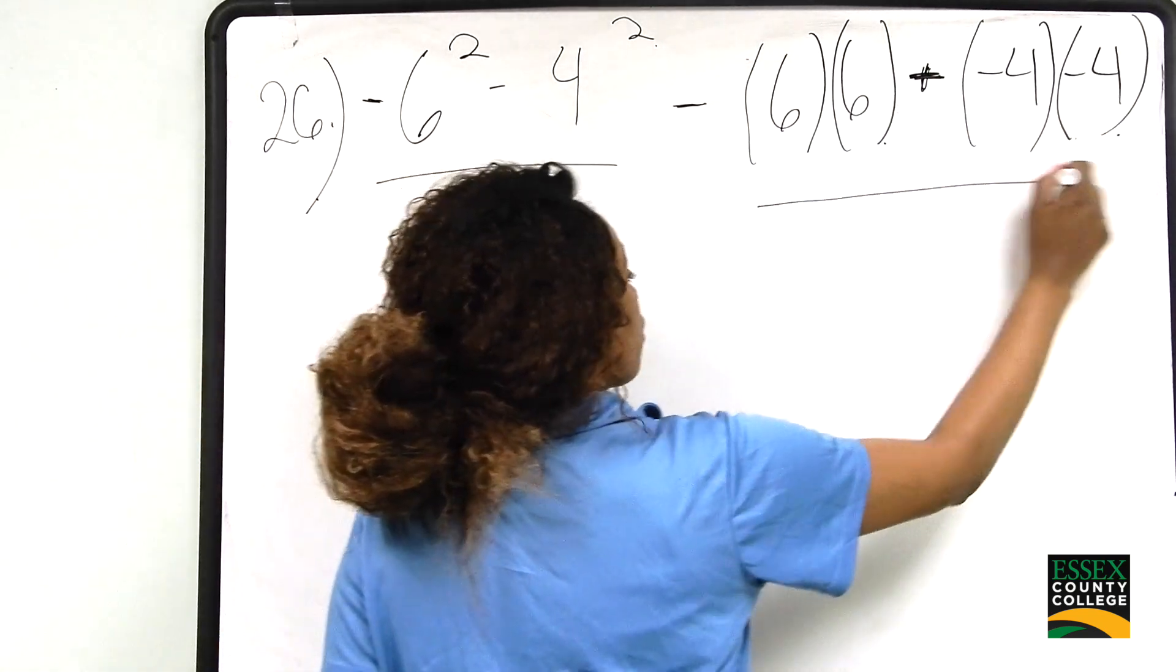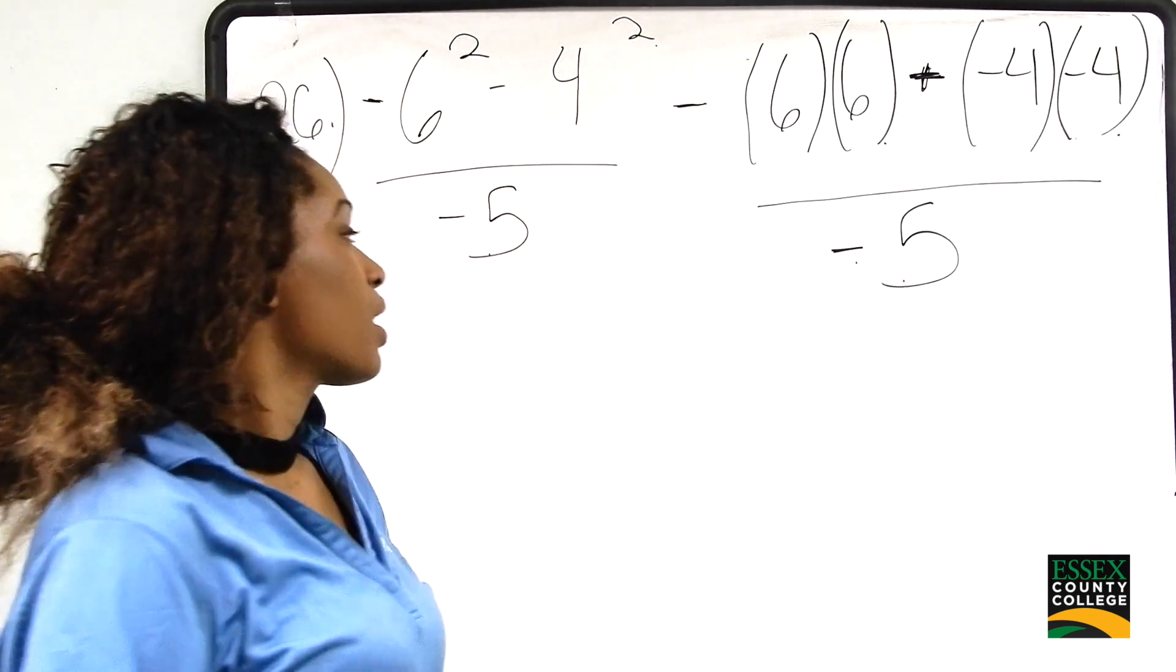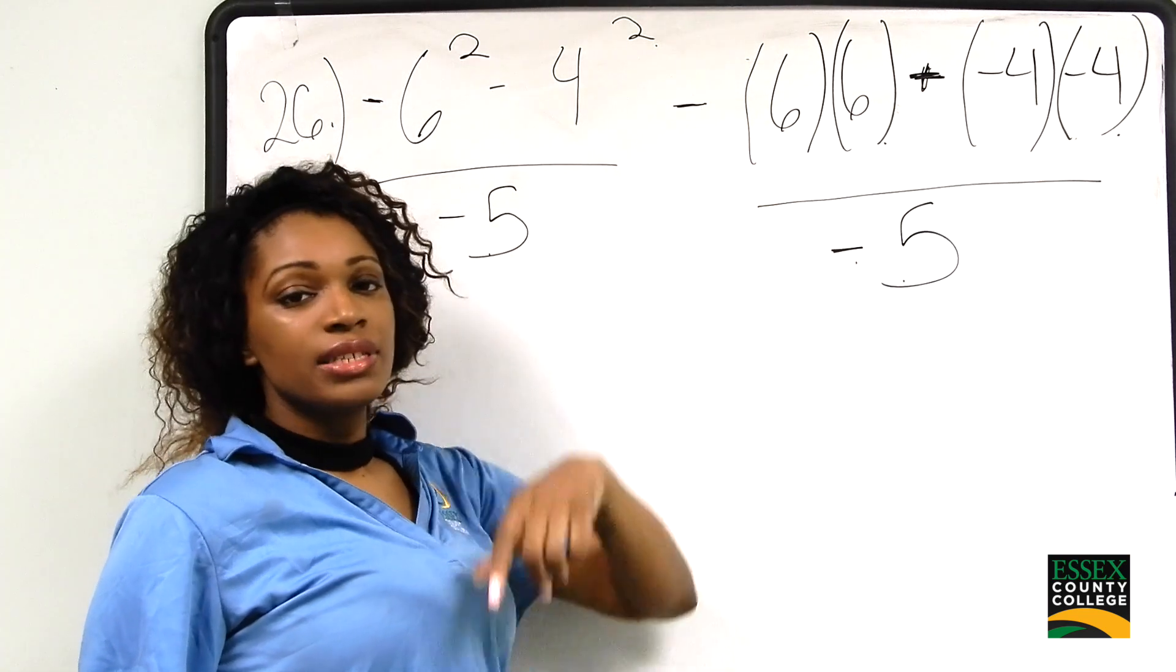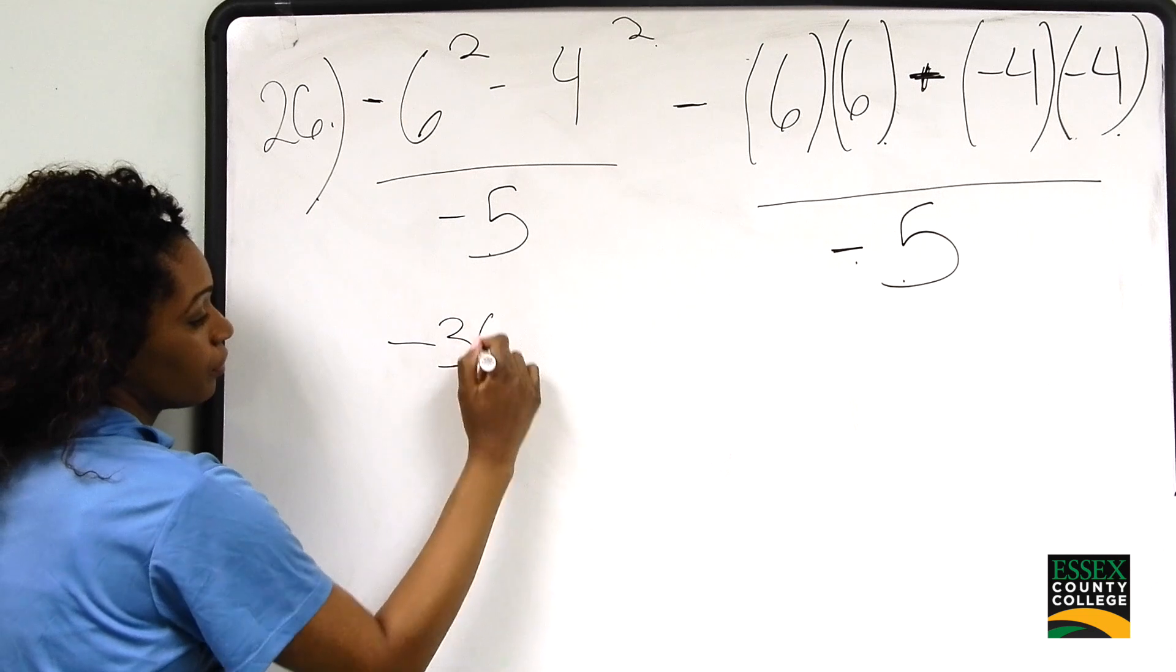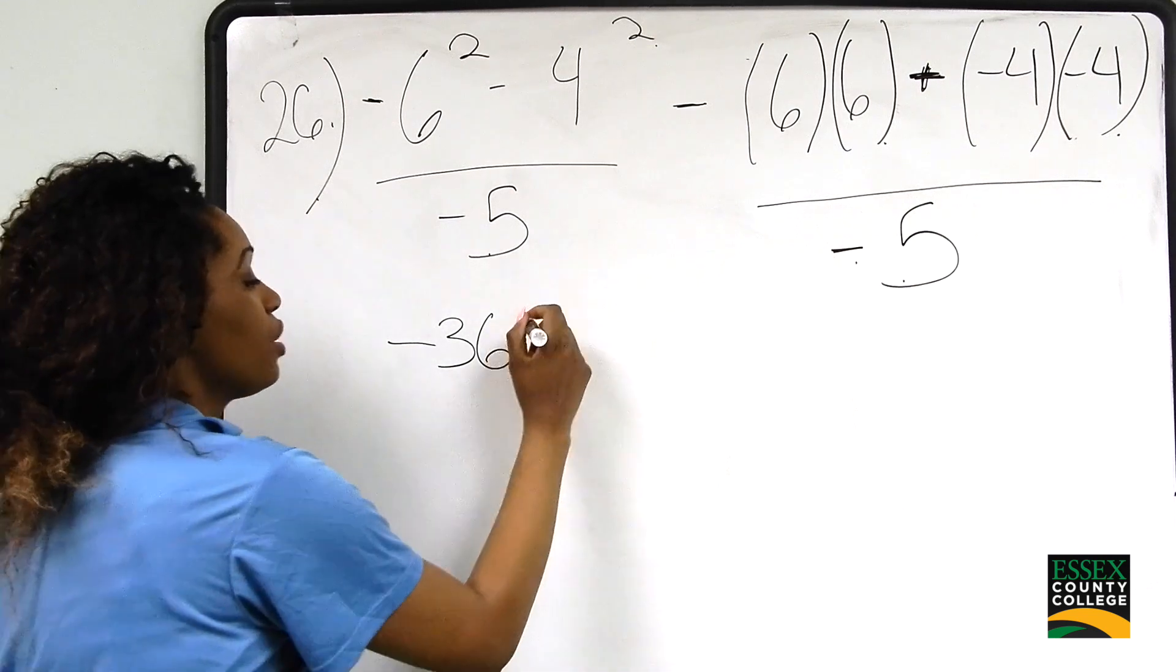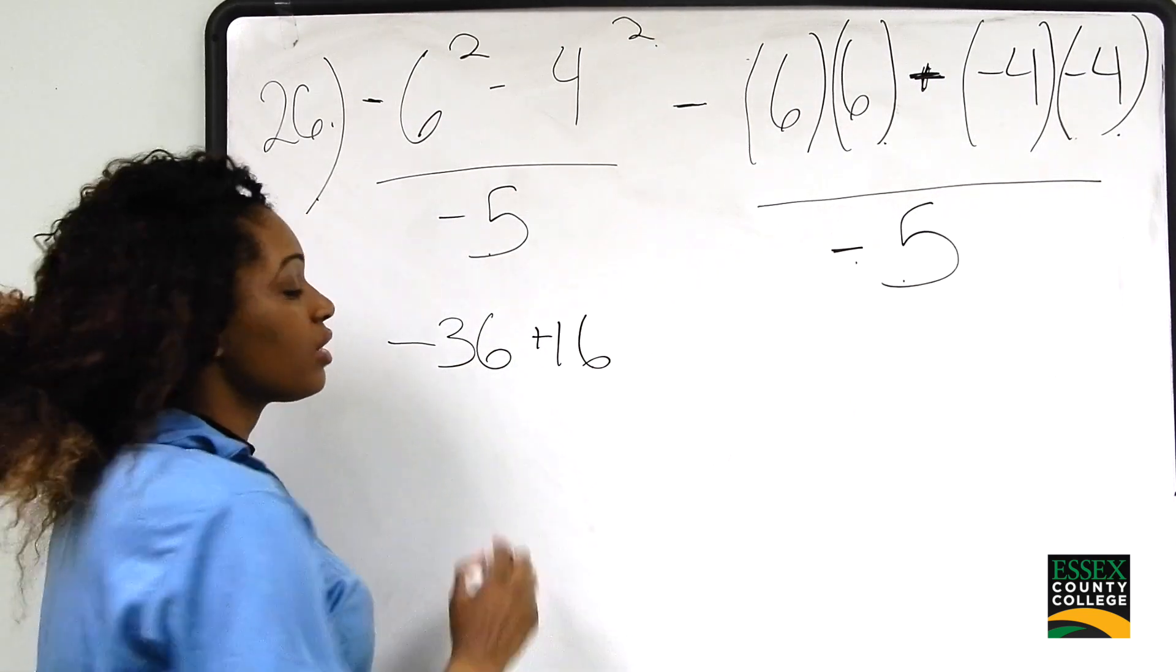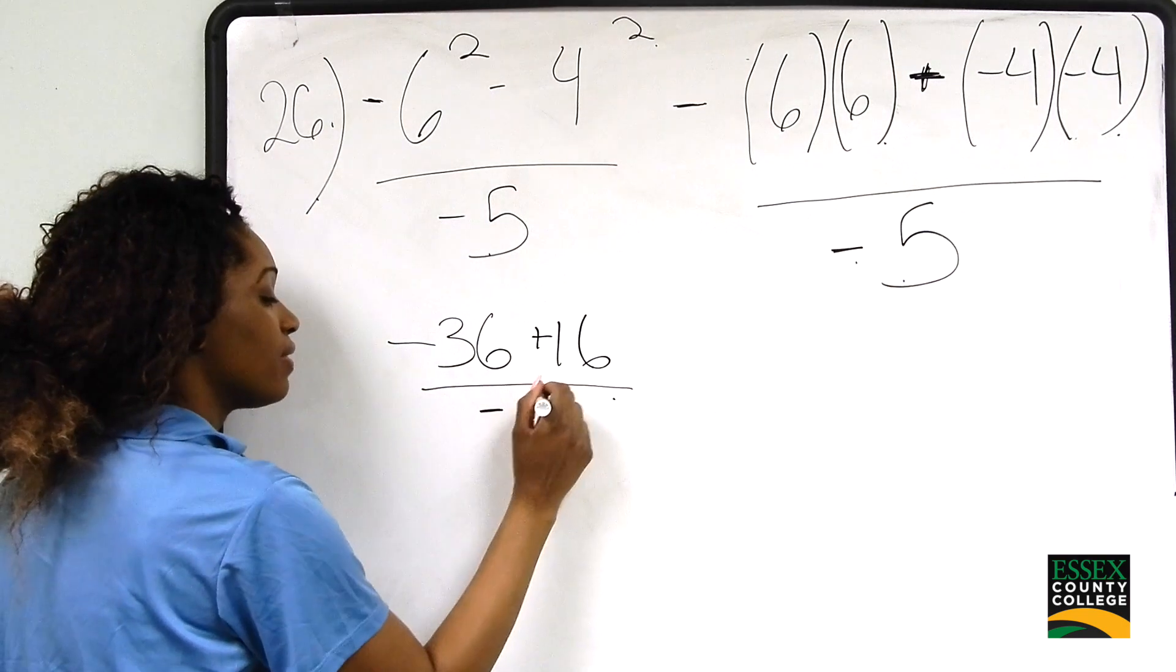And we're going to put this all over negative 5. 6 times 6 is 36, but remember we have the negative on the outside, so it's negative 36. And negative 4 times negative 4 gives us a positive 16. So we're adding 16 to the negative 36 and dividing all of this by negative 5 in the denominator.